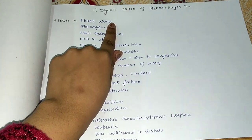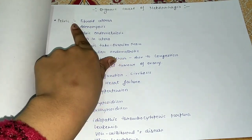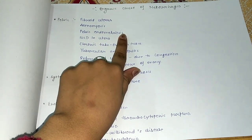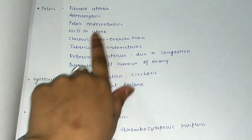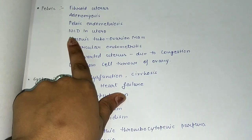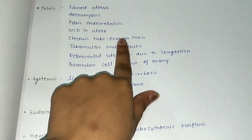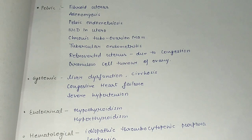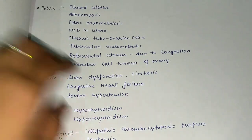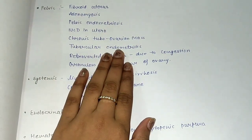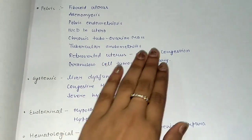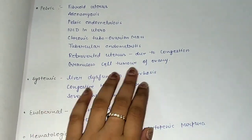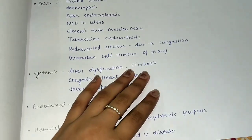Pelvic causes include fibroid uterus, adenomyosis, pelvic endometriosis, IUCD in utero, chronic tubo-ovarian mass, tubercular endometriosis, retroverted uterus due to congestion which can cause bleeding, and granulosa cell tumor of the ovary.